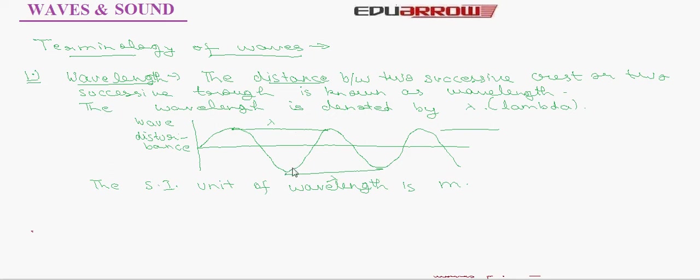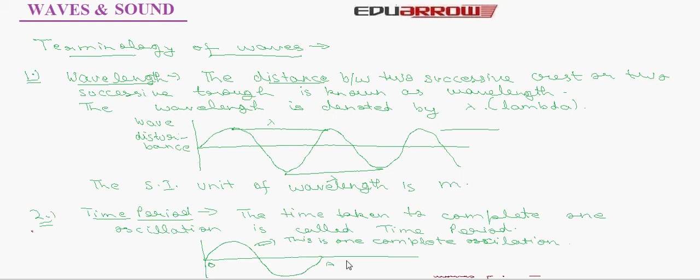Second is time period. The time taken to complete one oscillation is called time period. In the given figure, OA represents one complete oscillation. And the time taken to complete this oscillation is actually time period.